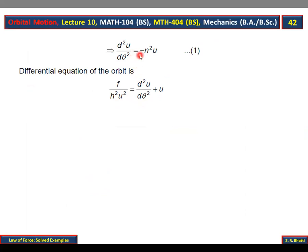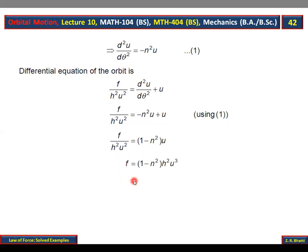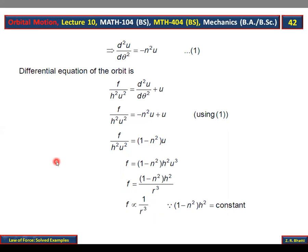D square u over d theta square equal to minus n square u hai. Yeh value differential equation of the orbit mein put karte hain: f over h square u square is equal to (1 minus n square) u. So f is equal to (1 minus n square) h square u cube, aur u cube ki jagah 1 over r cube aa jaayega. Yahan 1, n square, aur h square sab constants hain, to hum likh saktey hain: f is proportional to 1 over r cube. Pichle lecture mein bhi hum ne isi tarah ki example solve ki thi. Proof complete. Next hai example number 6.